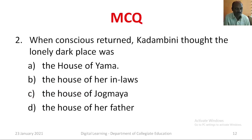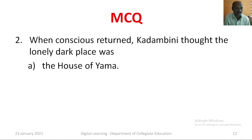Question number two: When consciousness returned, Kadambini thought the lonely dark place was — Option A: The house of Yama. Option B: The house of her in-laws. Option C: The house of Jogamaya. Option D: The house of her father. The correct answer is Option A, the house of Yama.